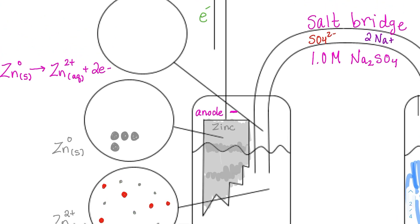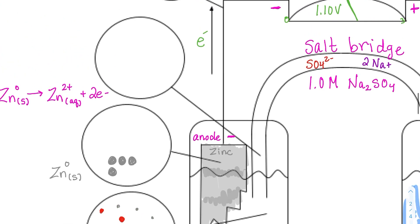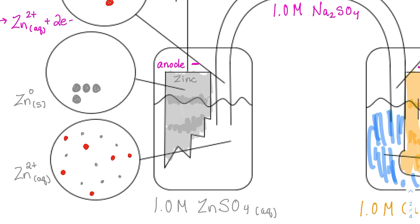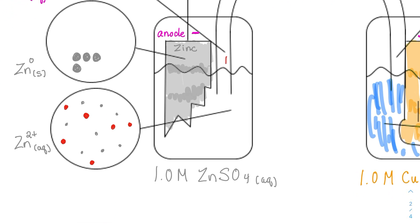Looking at the zinc half-cell, we need negative charge to neutralize the excess positive charge. Specifically, we need two sulfate ions from the salt bridge to flow down into the zinc solution to restore electrical neutrality. So sulfates move through the salt bridge into the zinc half-cell.